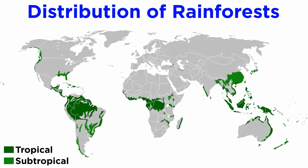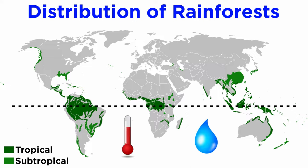For example, tropical rainforests aren't constricted to a single continent — they can be found on different continents, but their characteristics will be very similar, such as temperature, precipitation, and latitudinal location.